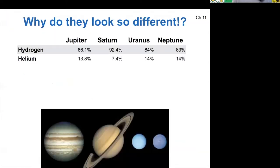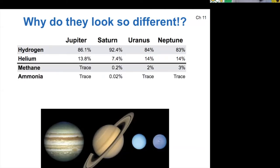So why do the gas giants have different appearances if they have very similar atmospheric compositions? This has to do not with the hydrogen and helium — those are colorless gases — but instead with the trace gases present in their atmospheres. Jupiter has trace amounts of methane and ammonia. These are the same gases that are compressed into solid ice just outside the rocky cores of these worlds. Methane and ammonia are present in different amounts on each planet, and that's what leads to their different appearances.